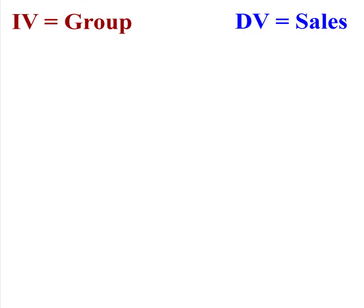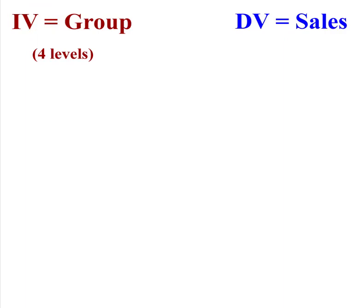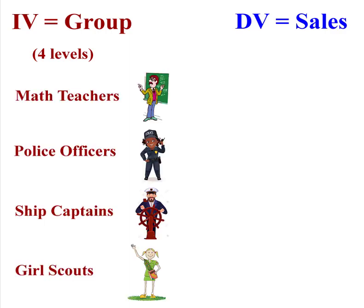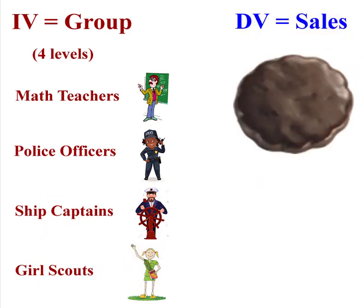So I came up with an IV with four levels — a categorical, nominal IV — and the four levels are different job types. Level one is math teachers, two is police officers, three is ship's captains, and last but not least are the Girl Scouts. The DV is sales. Let's pretend they're all selling cookies — my favorite is the Thin Mint.